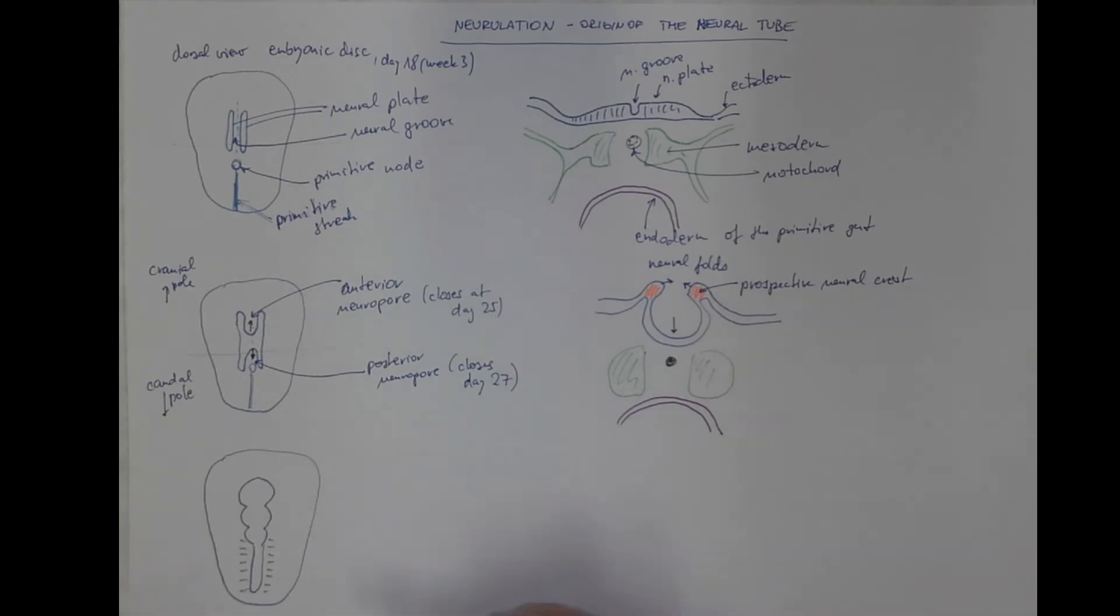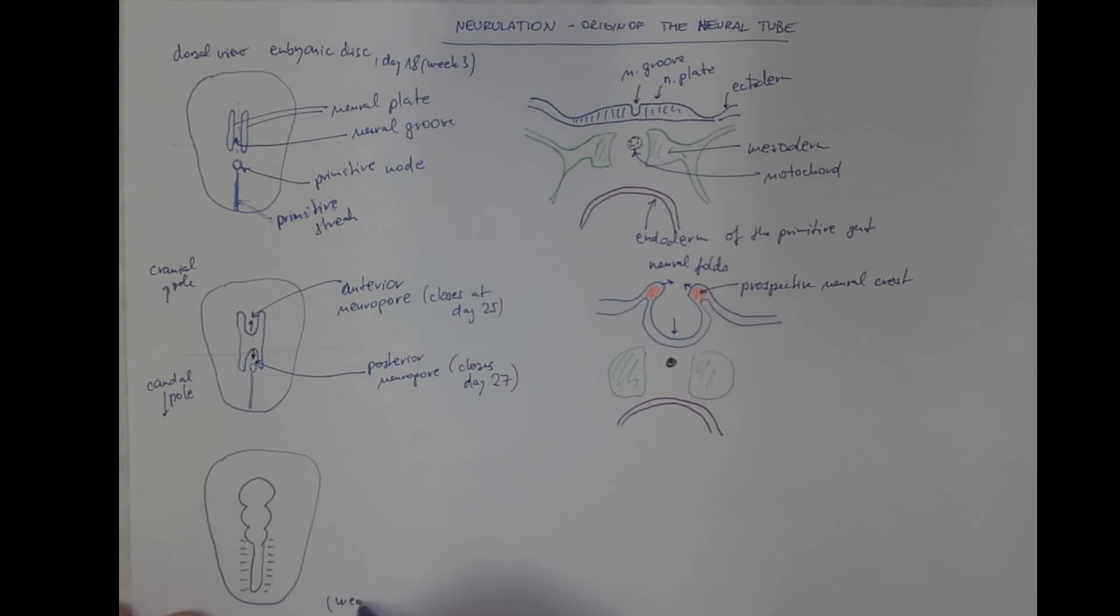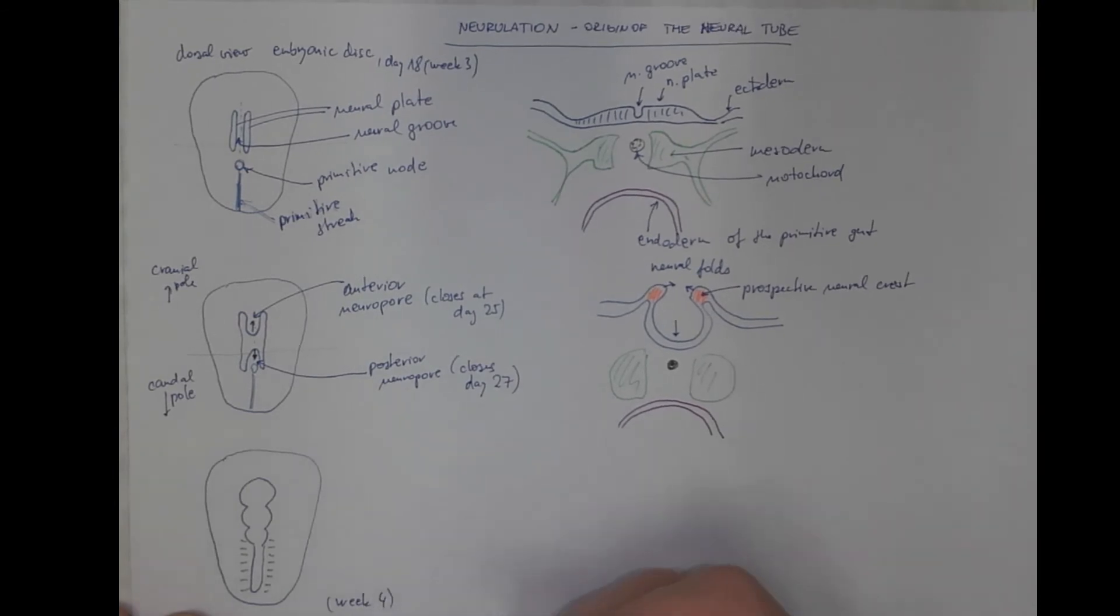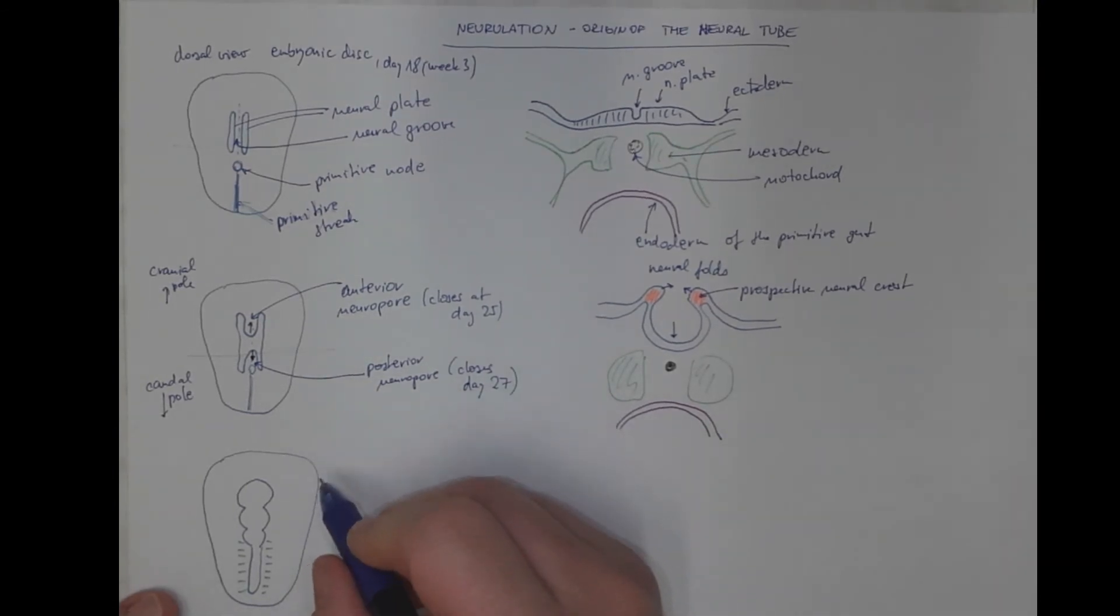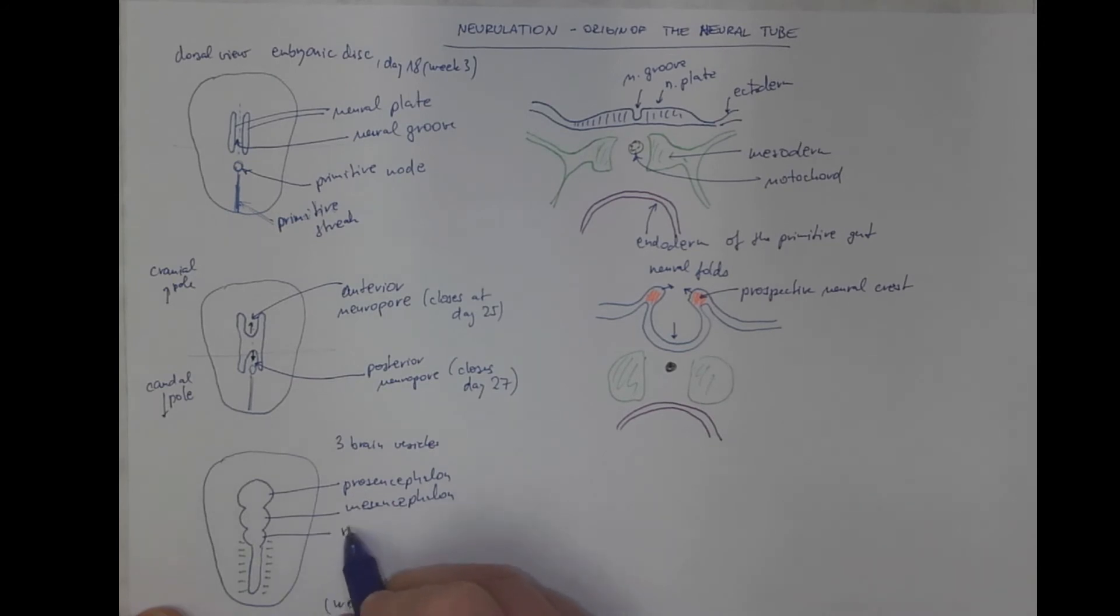So in week four, we got three brain vesicles. First I should say perhaps, it's a tube, a complete closed tube has been formed, which becomes segmented in the cranial part into prosencephalon, mesencephalon, and rhombencephalon.